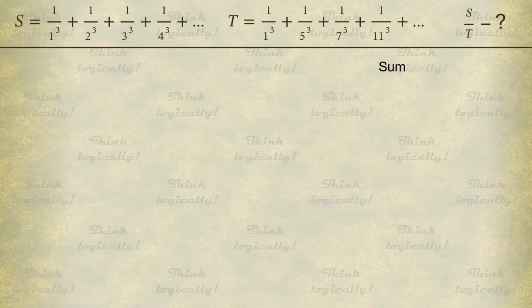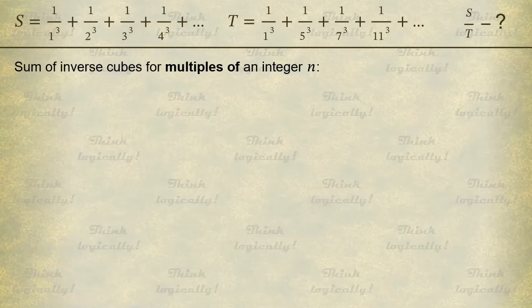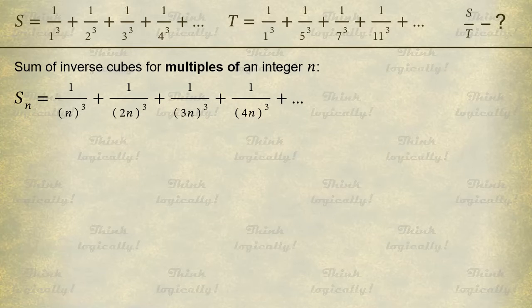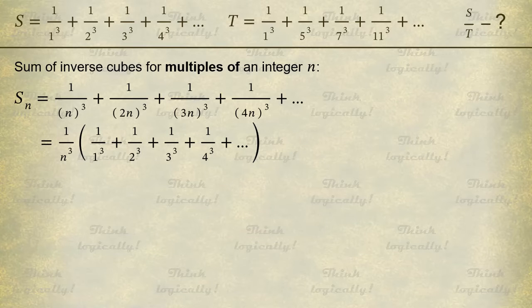For an arbitrary integer N, we take the sum of inverse cubes of multiples of N, denoted as S with index N. Every denominator of the sum is a multiple of N cubed. So this time we factor out 1 over N cubed and get in the brackets the sum of all positive inverse cubes, known as S. Thus, S sub N equals 1 over N cubed times S.